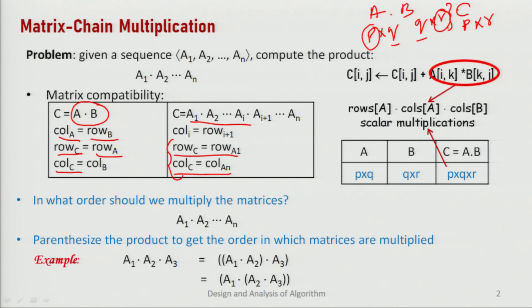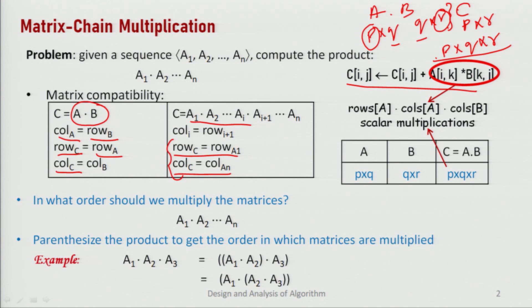The next question is: how many scalar multiplications are required to multiply two matrices? Using the standard formula C[i][j] = C[i][j] + A[i][k] × B[k][j], if the order of the first matrix is P×Q and the order of the second matrix is Q×R, then the total number of scalar multiplications required is P × Q × R. This is what we need to remember.